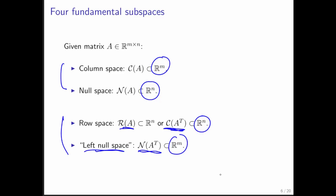Why is this called the left null space? Well, if you take your matrix A, and take a vector as a row vector and multiply it times the matrix A from the left, then the set of all such vectors that map to the zero vector — all of those vectors are in the left null space. So it's like multiplying from the left with vectors.